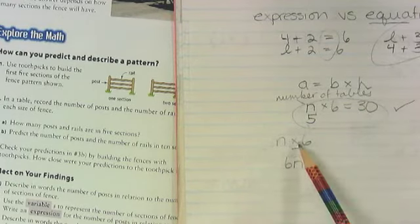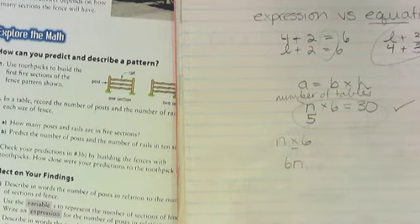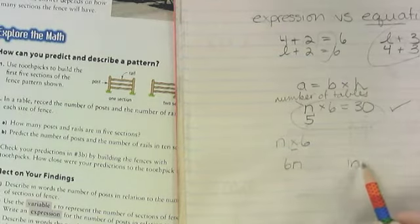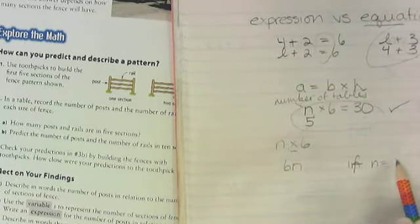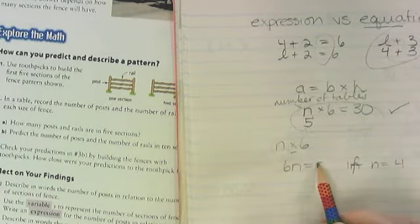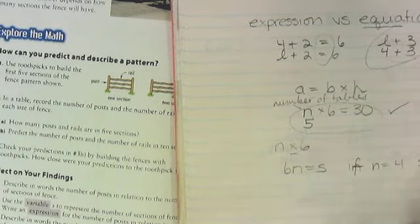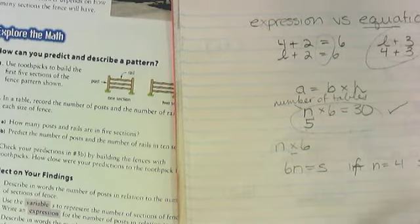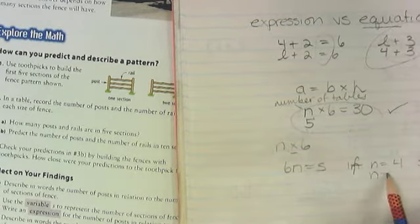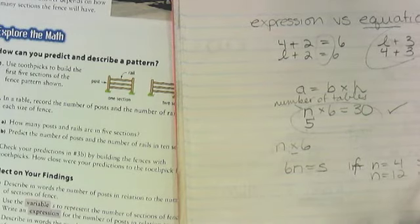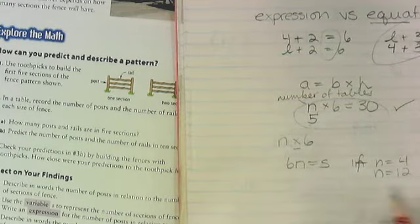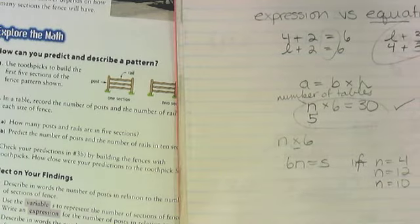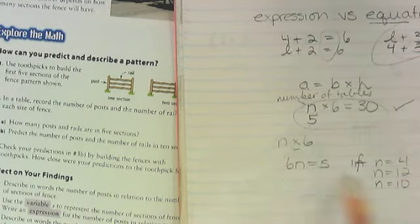If we know 6N, what happens if there are four tables? How many students are there? If N equals four, students equals twenty-four. If N equals twelve, students equals seventy-two. If N equals ten, students equals sixty. Because six times ten equals sixty.